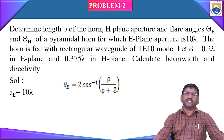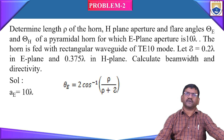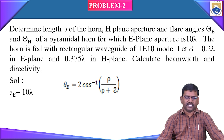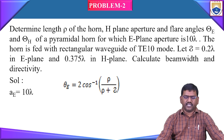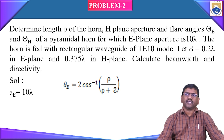Let us today discuss some basic problems on horn antenna. The first problem is: determine the length rho of the horn, the H-plane aperture, the flare angles theta_e and theta_h of a pyramidal horn for which the E-plane aperture is 10 lambda. The horn is fed with a rectangular waveguide of TE10 mode. Delta is given as 0.2 lambda in the E-plane and 0.375 lambda in the H-plane.